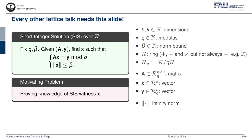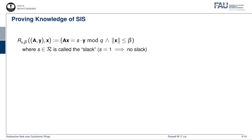The motivating problem of this work is that of proving the knowledge of an SIS witness X. To be more concrete, let me introduce this generalized SIS relation, which is parameterized by a ring element S, a norm-bound beta, and also the modulus Q. The relation takes as input a statement specified by a matrix A and a vector Y, and also a witness vector X, and checks if A times X equals S times Y modulo Q, and the norm of X is bounded by beta. Notice that the vector X doesn't necessarily satisfy AX equals Y exactly, but instead there is an element S called a slack. If the slack S equals 1, we say the witness X satisfies the statement AY with no slack; otherwise we say X satisfies AY with slack S.